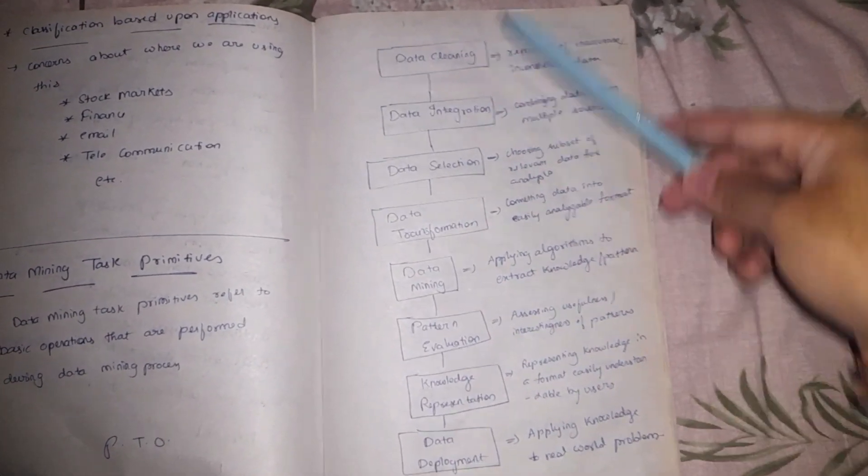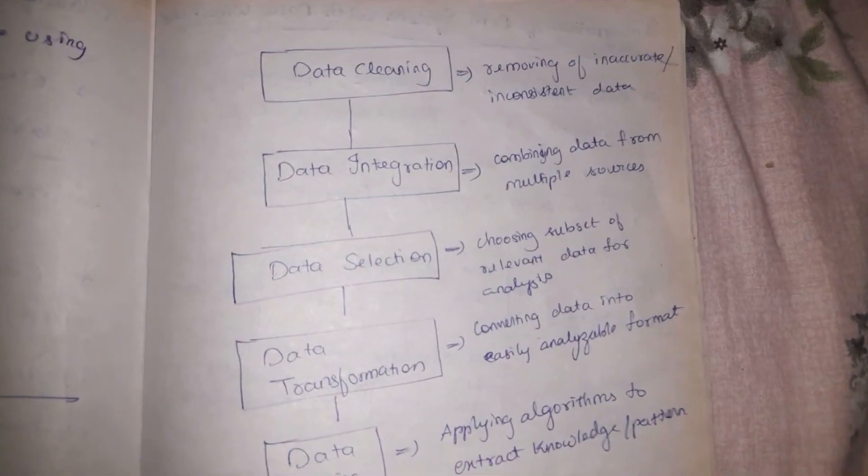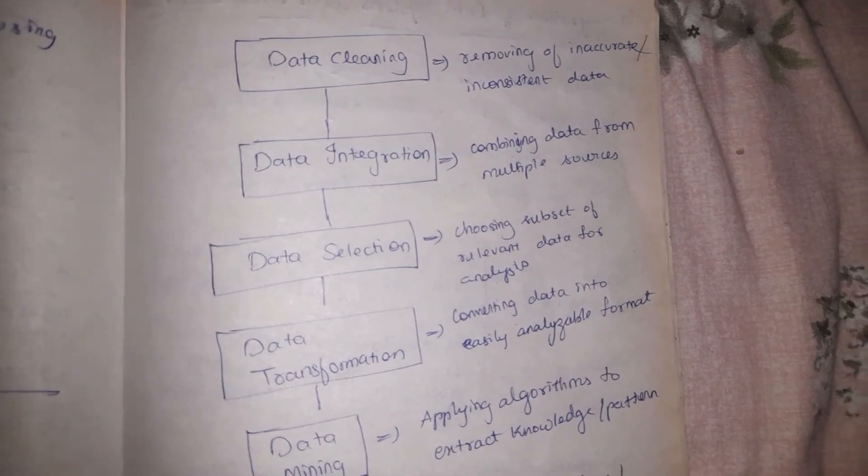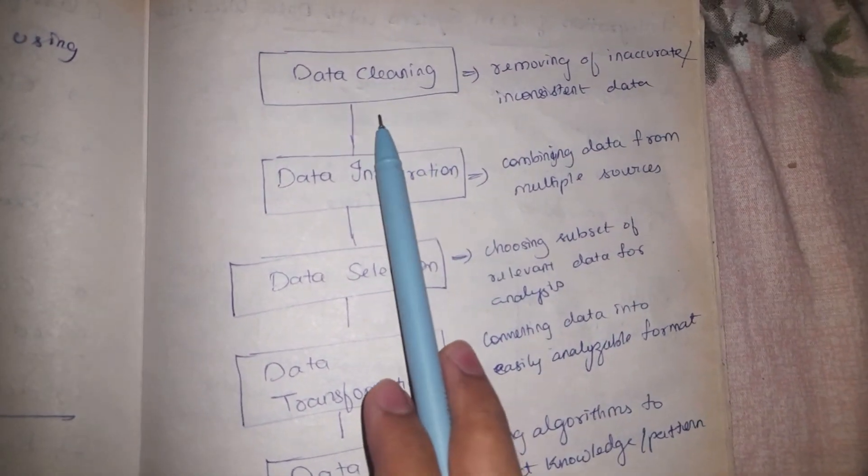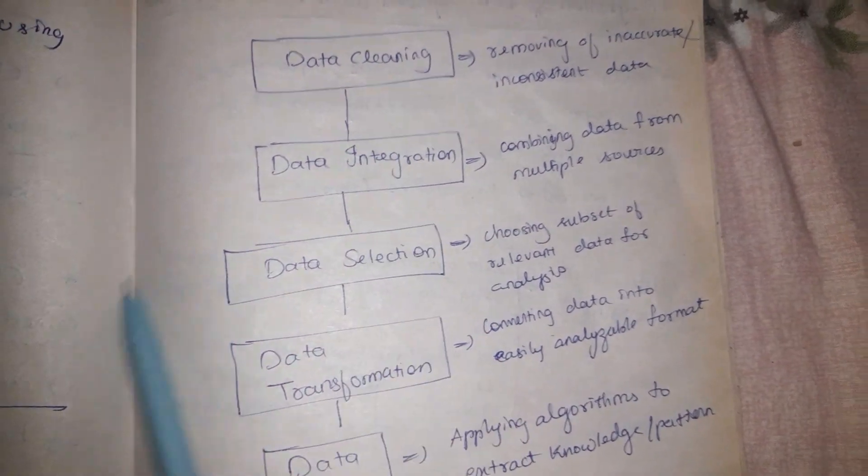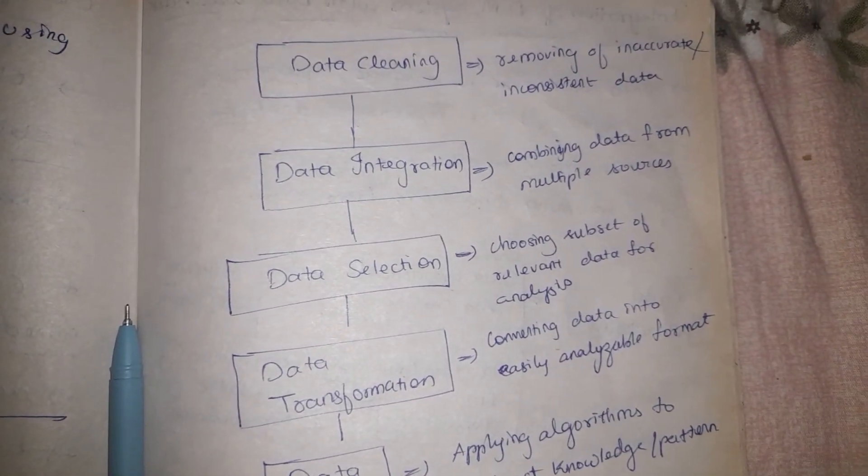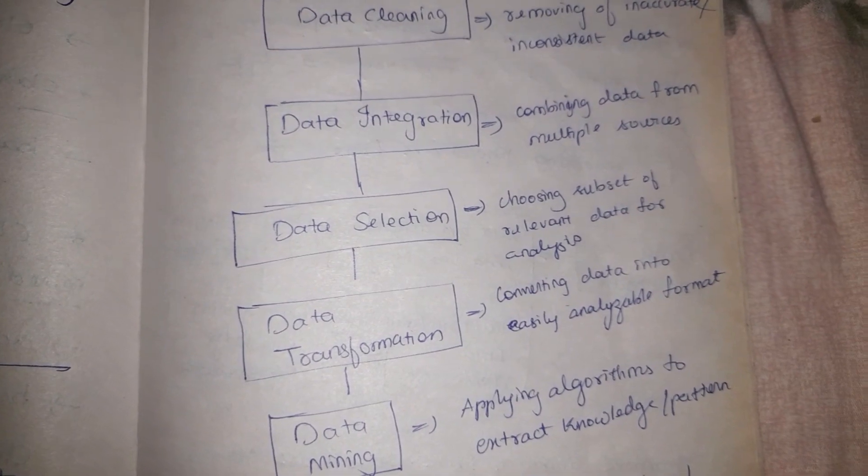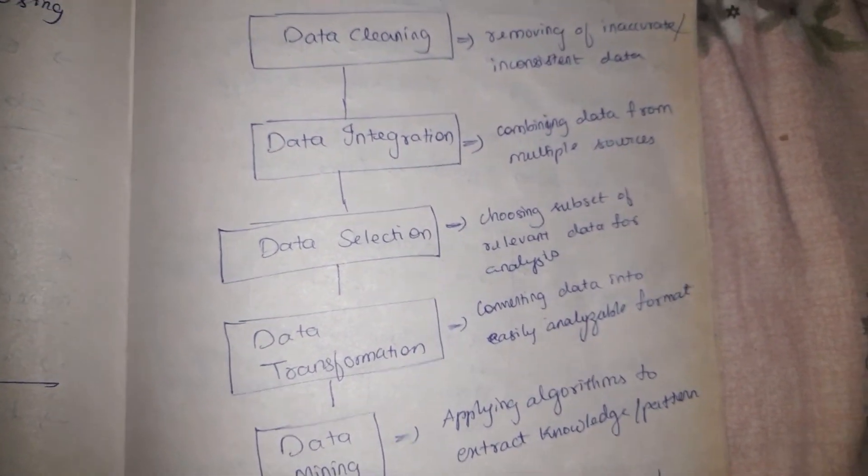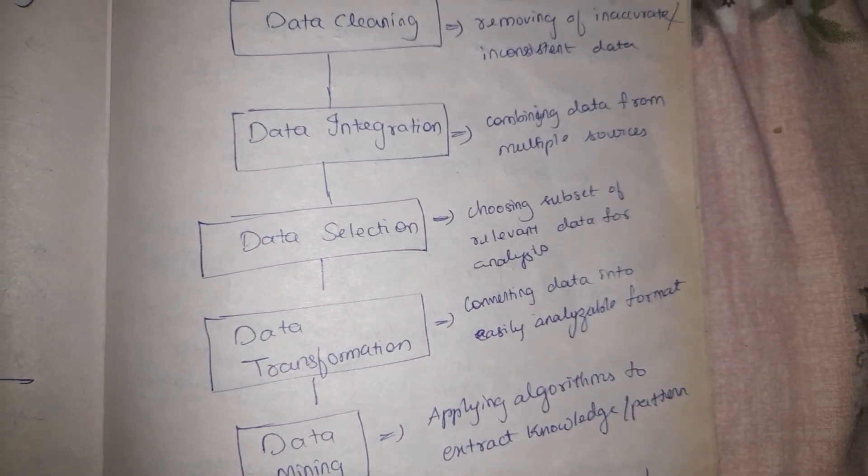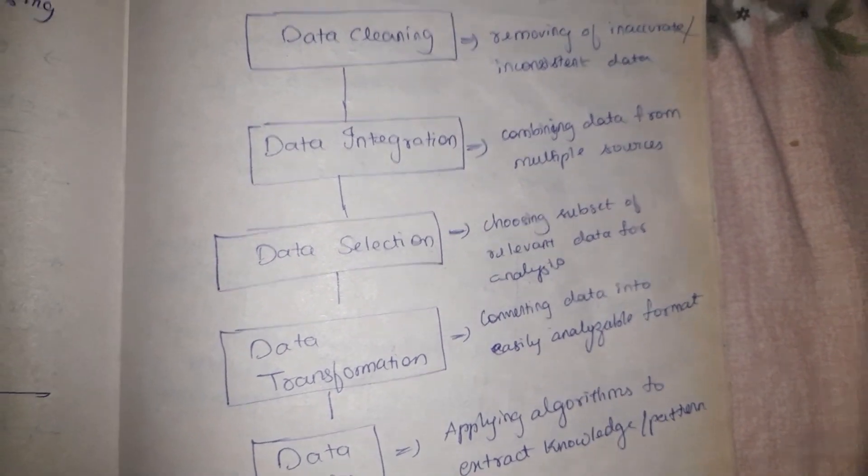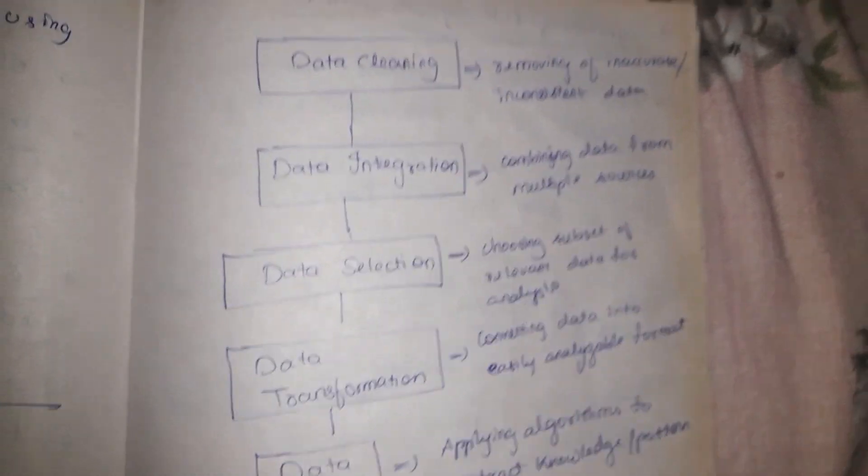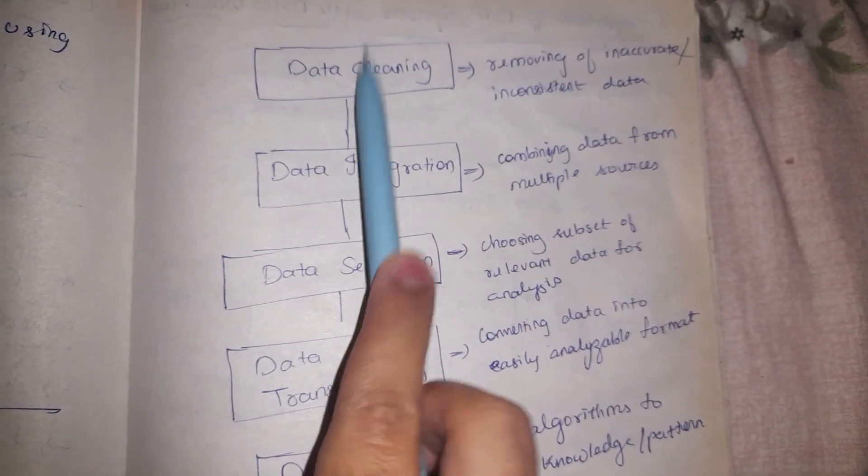This is the diagram of the data mining task primitives. These are the tasks which need to be done. Let's jump into it one by one to understand them. The first thing is data cleaning. Cleaning simply indicates removing inaccurate data. When we collect data from real time, there will be some inaccuracies or incorrect forms of data which we need to remove. That is done in the data cleaning step.